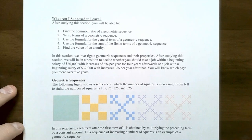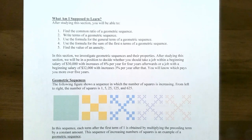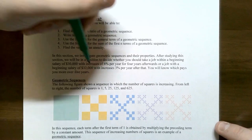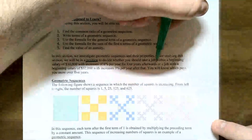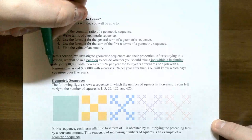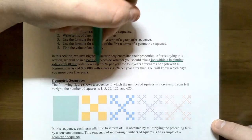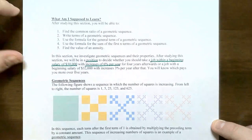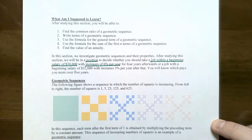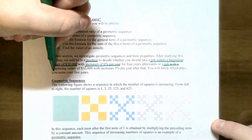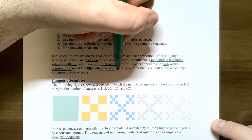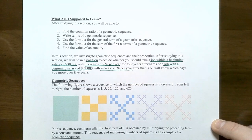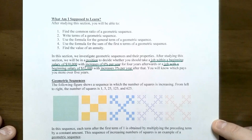So why are geometric sequences so important? Suppose you're offered a position and need to decide which offer to accept. One job has a beginning salary of $30,000 with a 6% increase every year for four years. Or you have a job offer with a beginning salary of $32,000 but only a 3% raise every year. How much will you make per year in the fifth year? Which company's offer will be better for you? We'll be able to answer that as we go through this section.